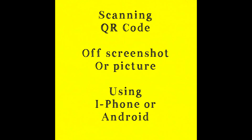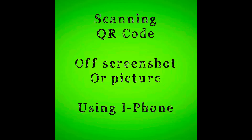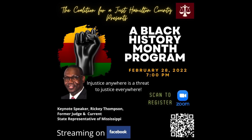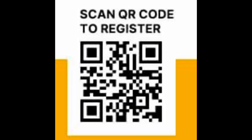Hi, so this video is about scanning the QR code off of a screenshot or a picture using your iPhone or your Android. First we're going to begin with iPhone. This is a sample advertisement where you might want to attend an event and it says you have to scan to register — you have to scan that QR code, that scrambled code.